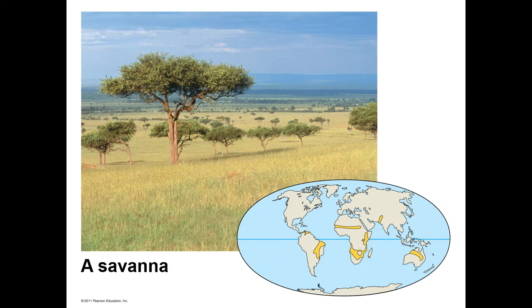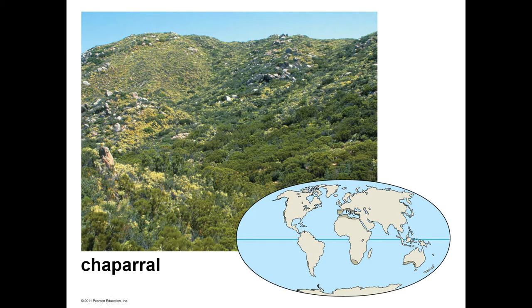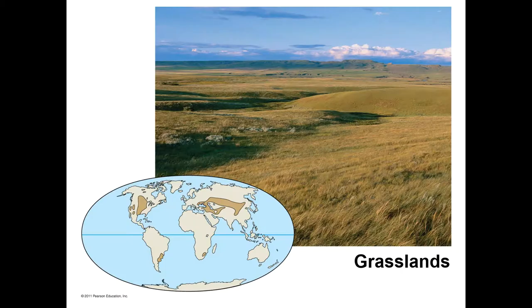A savannah has lots of grasses and usually herbs like flowering annual plants, with really warm temperatures — you can find them on the globe in specific regions. Chaparral is pretty hot but can also get cold, so it has seasons, with trees, shrubs, and herbs. Grasslands are a bit colder than savannah, found a bit further from the equator, with less rainfall than in a forest.